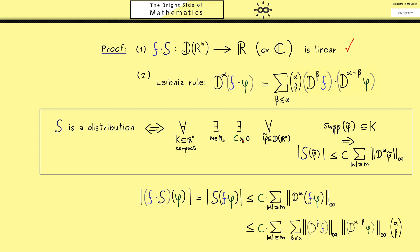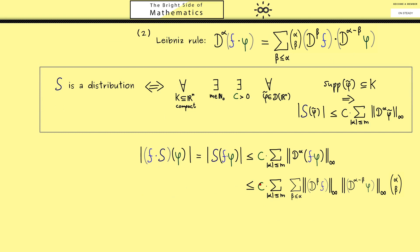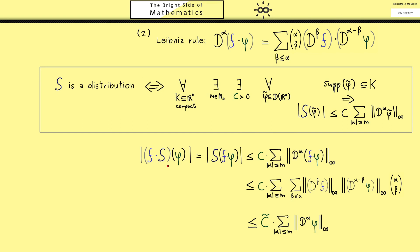The terms involving f are always finite numbers that do not depend on phi, so all those parts can be absorbed into a new constant c-tilde. The remaining part can then be written as the sum of the partial derivatives of the test function phi. With this calculation, the whole expression can be read with the new linear map f times s, and therefore the equivalence shows that f times s is indeed a distribution.